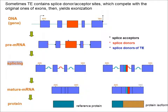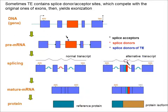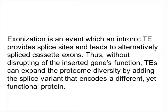Sometimes a TE contains splice donor or acceptor sites which compete with the original ones of exons, leading to exonization. Exonization is an event in which an intronic TE provides splice sites and leads to an alternatively spliced cassette exon. Thus, without disrupting the inserted gene's function, TEs can expand the proteome diversity by adding splice variants that encode a different, yet functional protein.